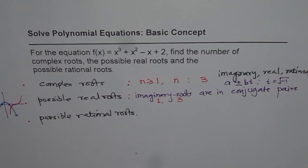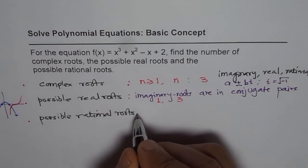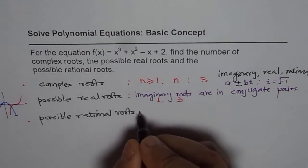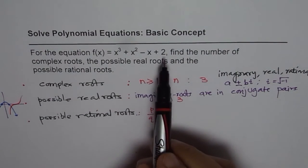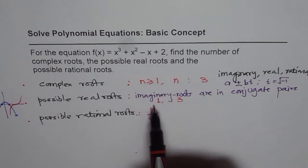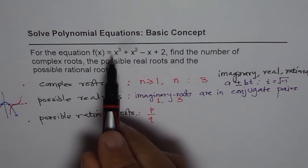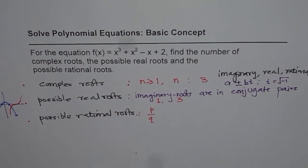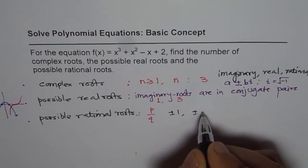And the third part is possible rational roots, which we really find from the ratio. In general, possible rational roots are in the form of p over q, where p is the factor of the constant term, which is 2 in this case. Q is factor of leading coefficient, which is 1 in this case. And therefore, the possible number of rational roots are plus minus 1 or plus minus 2.